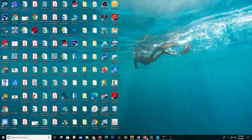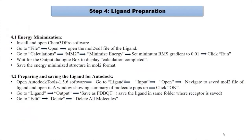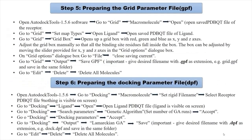To prepare the ligand in AutoDock tools, we go to ligand, input, open, and navigate to the energy-minimized ligand in MOL2 format. It shows the ligand summary — we click OK. Then we go to ligand, output, and click save as PDBQT. We save the ligand as ligand_em.pdbqt in the same folder. Then we go to edit, delete, and delete all molecules. The ligand preparation is now done.